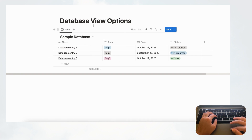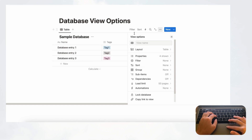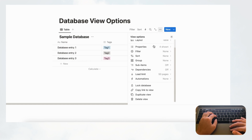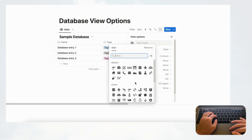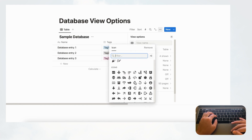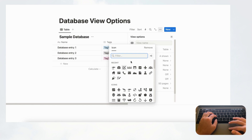To access your database view options, go to the three dots on the database and click it. You'll see all of these database view options. Starting from the top, you'll first notice the icon slot, where you can choose any icon from Notion's icon library. This is great if you want to really customize it, and it will reflect on the icon slot on this tab.